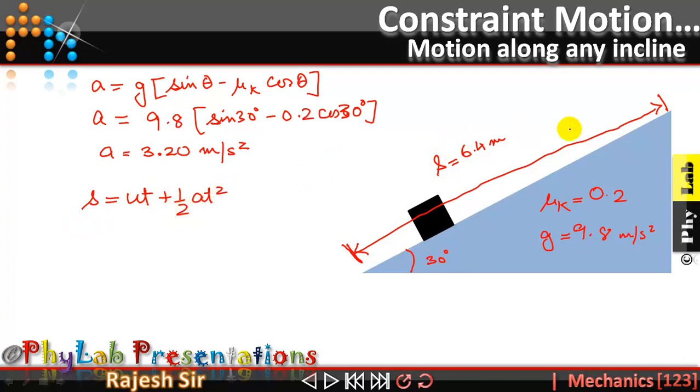Displacement suffered by this block while moving from this initial point to this final point will be 6.4. So this distance is 6.4, the initial velocity was 0 plus half into acceleration happens to be 3.2 into t square.